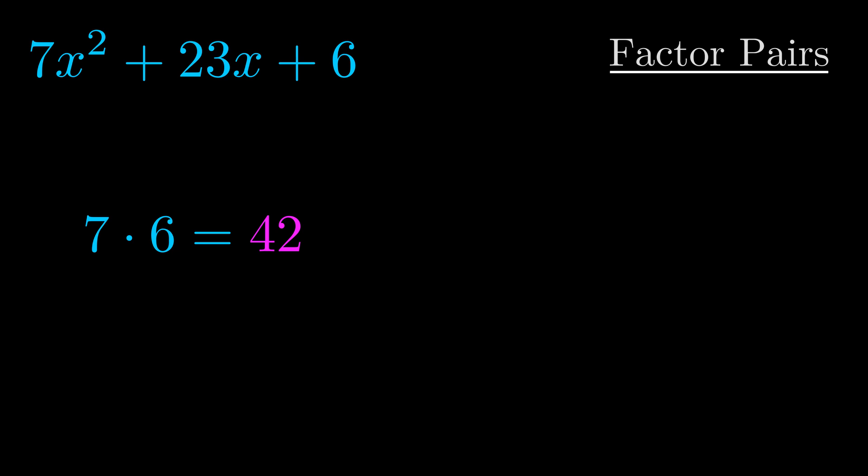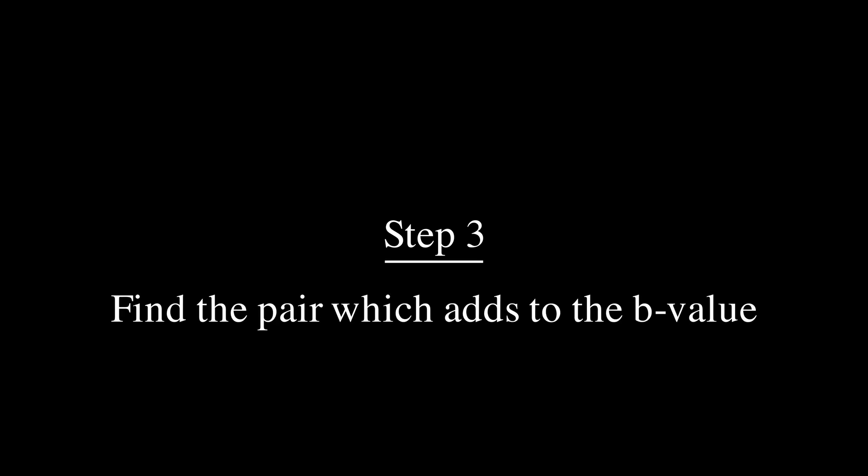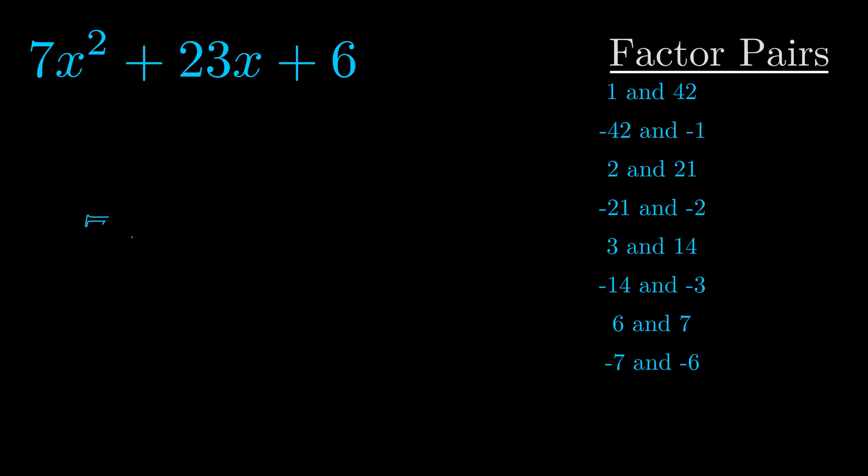Okay here's what I came up with. Now once you have these factor pairs the goal is to find which of these pairs adds to the b value. The b value is the coefficient on the x term. That's the middle term, the one that we haven't done anything with yet. And really this is the only factor pair that we need.